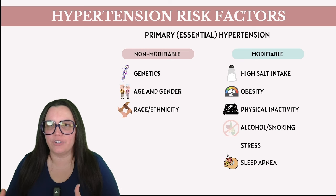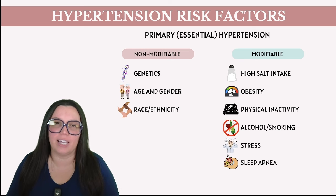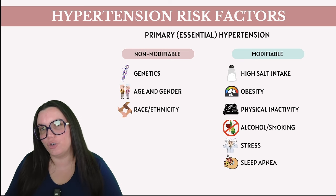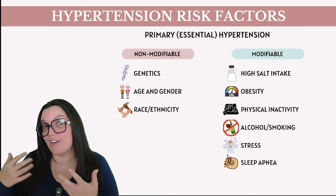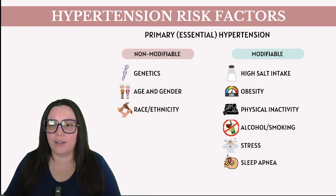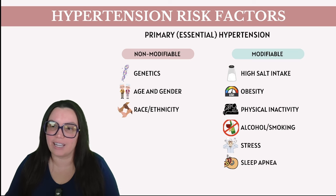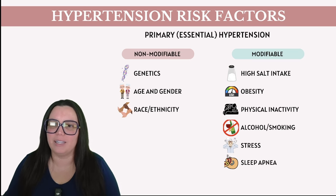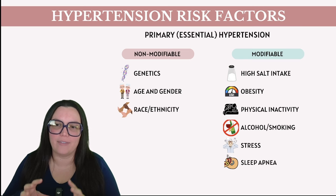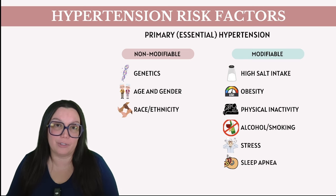So what are some risk factors we need to take into account when considering primary hypertension? There are two categories: modifiable and non-modifiable. For non-modifiable — things we cannot change — we start with genetics. A family history of hypertension will ultimately increase a patient's genetic predisposition to having it, and that's not something we're going to be able to change.